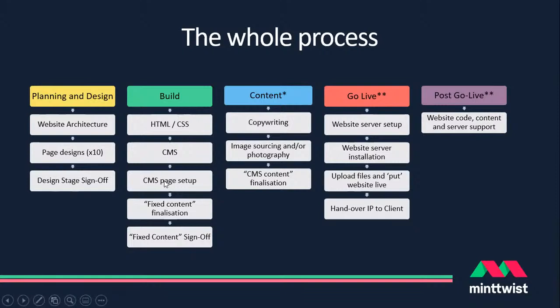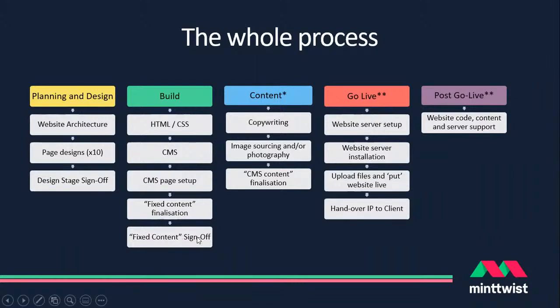A content management system is essentially the database layer of the three-tiered architecture — it uses code to pull content from the database and present it as part of the front end. CMSs are well-developed enough that it's straightforward to make them reflective of the bespoke design created for the front end. Elements that need to be hard-coded must be signed off carefully, since changing those takes disproportionately more time than changing content inside a CMS.